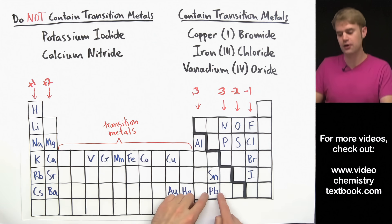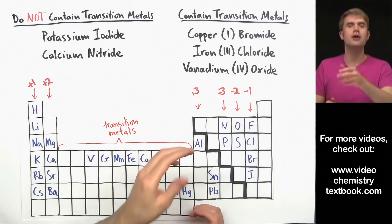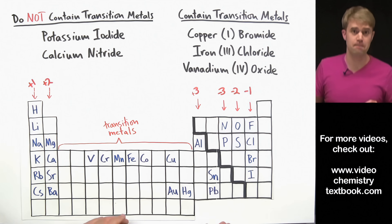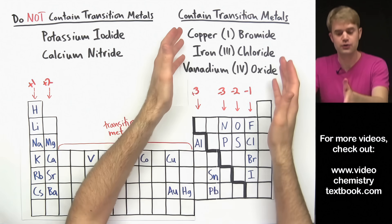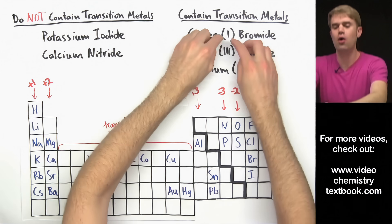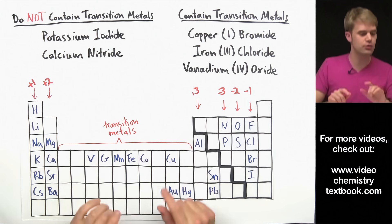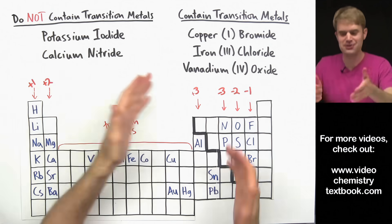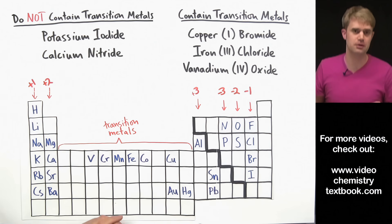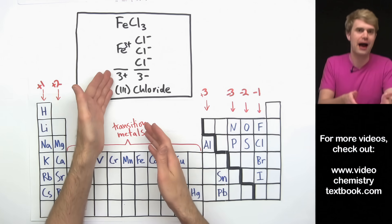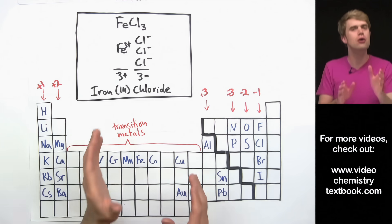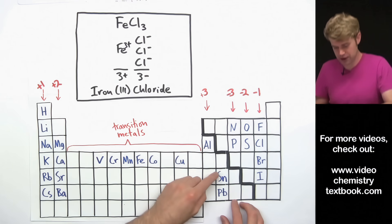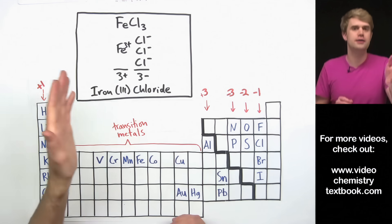Aluminum can only make a 3+ ion, so you don't need to use Roman numerals with aluminum either. I should point out that some metals here that are not technically transition metals still can make ions with different charges, so we have to use Roman numerals when naming compounds with tin and lead as well. The big point: if you're naming compounds with ions that can make different charges, you always need Roman numerals — but don't put them in if the metal can only make one charge. Not only is it a waste of time, it's wrong.